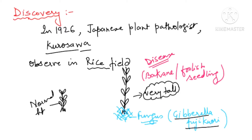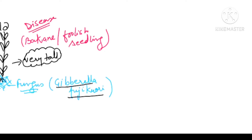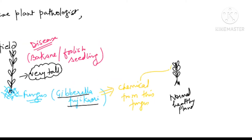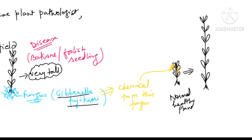They isolated the chemical released by this fungus and applied it to healthy, normal seedling plants. When this chemical was applied to the normal plant, they found that immediately after application the plant was becoming tall. This meant the chemical could bring about stem elongation — that change was occurring.